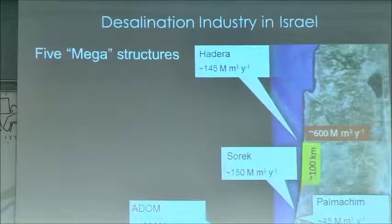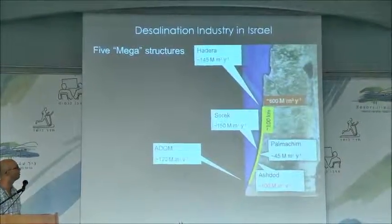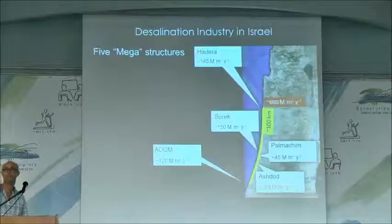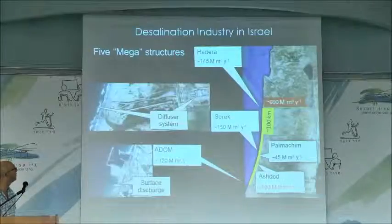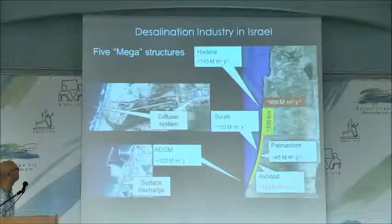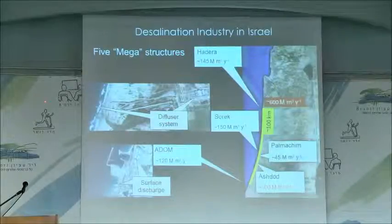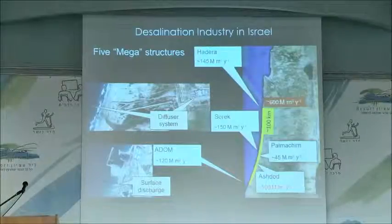The current state in Israel is five megastructures producing around 600 million cubic meters of potable water and releasing about that amount of brine back into the marine environment, along a coastal seashore of about 100 kilometers. I'll give two examples of actual facilities. One is the SOREC, a diffuser system that sits out in the ocean. The second is a dome-astron desalination facility with a surface discharge of desalinated brine together with the cooling systems of the power plant units.